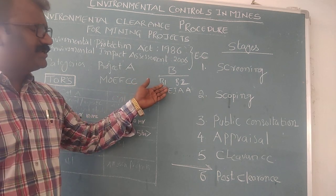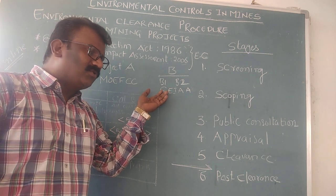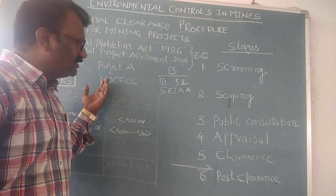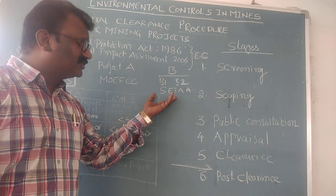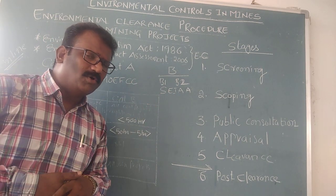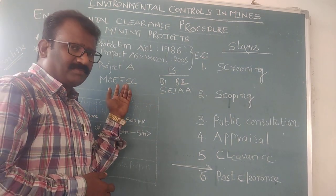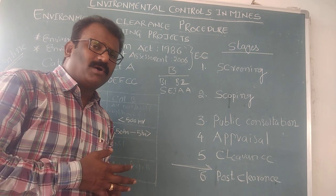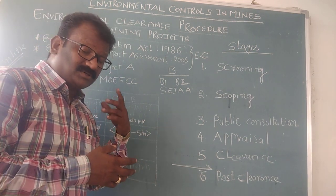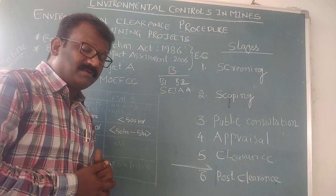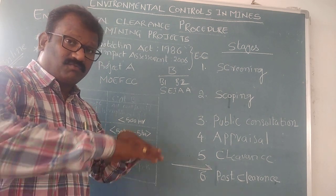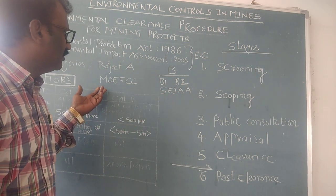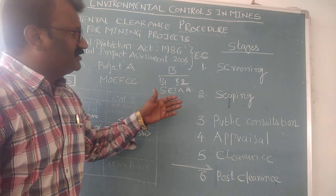Sometimes B1 and B2 category projects also require permission from the central government — for example, when a project spans across two state boundaries, or when it involves national parks, sensitive areas, endangered species, or forest reserve areas. In such cases, MoEF clearance is required even for B1/B2 category projects. The next stage is scoping.